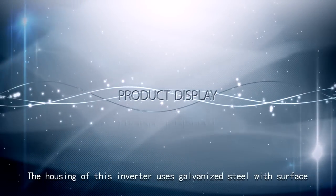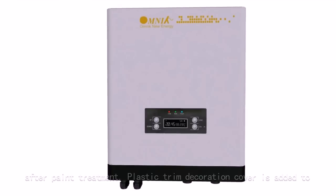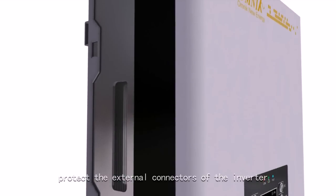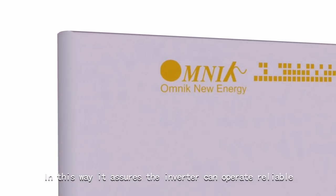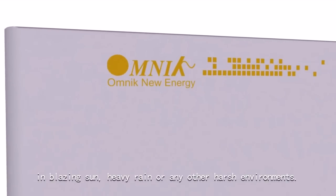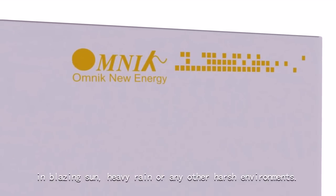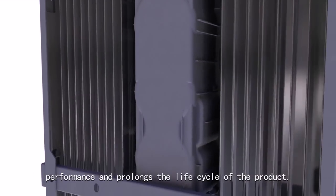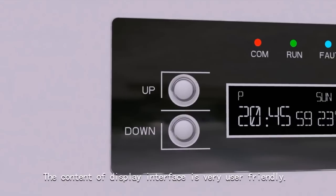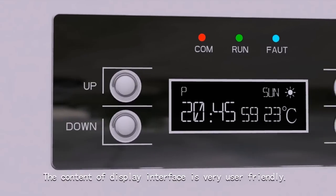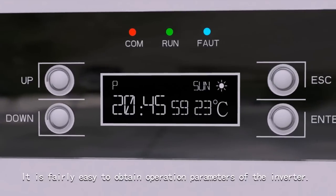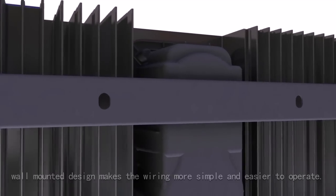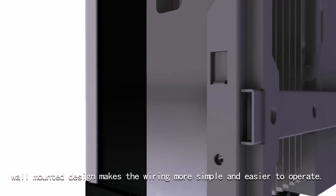The housing uses galvanized steel with surface paint treatment. Plastic trim decoration cover protects the external connectors, ensuring the inverter can operate reliably in blazing sun, heavy rain, or any other harsh environments. The integrated aluminum radiator improves cooling performance and prolongs the product life cycle. The display interface is very user-friendly, making it easy to obtain operation parameters. The sensing interface makes it more reliable, and wall-mounted design makes wiring simpler and easier to operate.